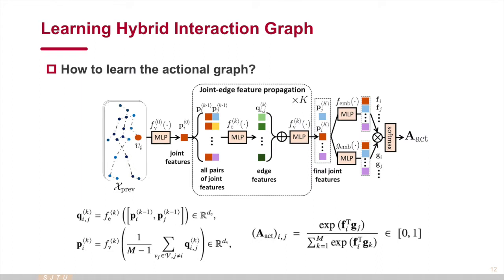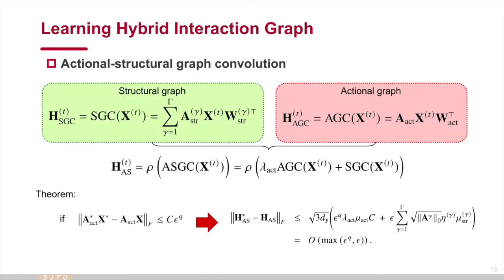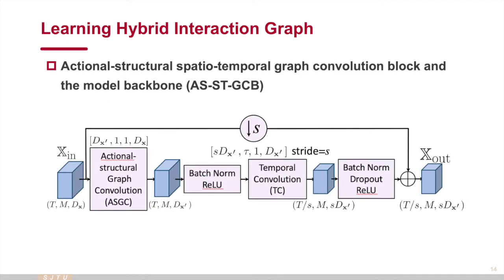To learn the action graph, we propose an inference module based on neural message passing and a tension mechanism to form the graph adjacency matrix. Based on the action graph and structural graph, we propose the action-structural graph convolution, which uses a linear combination of two graph convolution terms followed by an activation function to obtain the hybrid features. Furthermore, we apply the temporal convolution after the graph convolution to consider the temporal relations, leading to the core module, action-structural-spatial-temporal graph convolution block of our model.